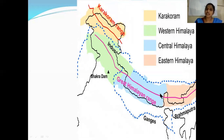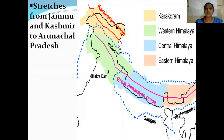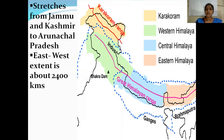These northern mountains consist of two groups of mountains: the greater Himalayas and the Karakoram ranges. The whole northern mountains, from Jammu Kashmir to Arunachal Pradesh, consist of the Karakoram ranges and the Himalayas. The east-west extension of the northern mountains is 2,400 kilometers.